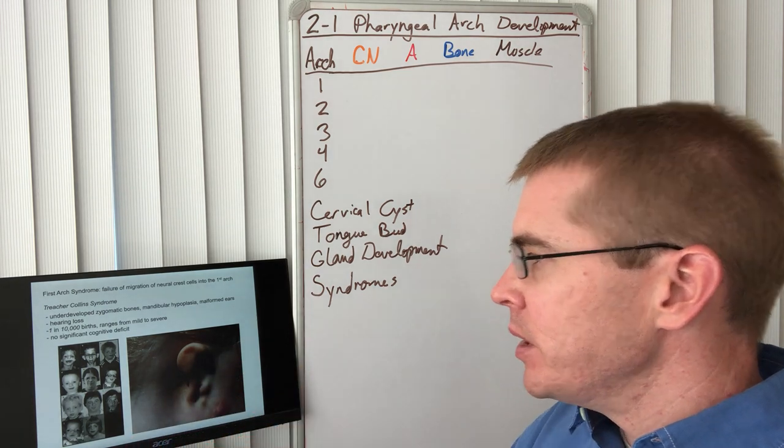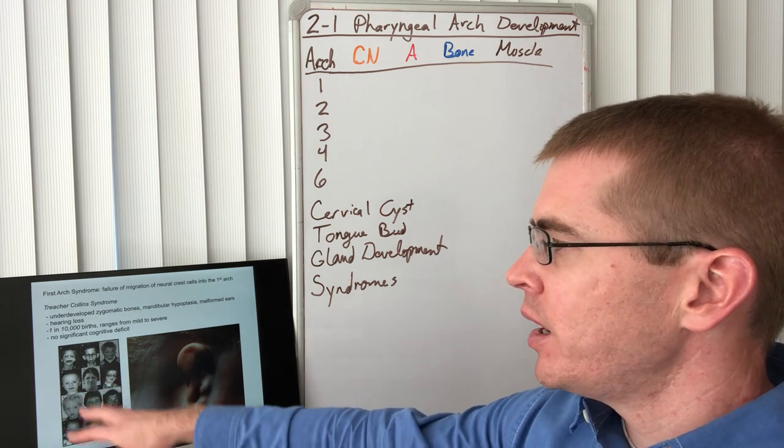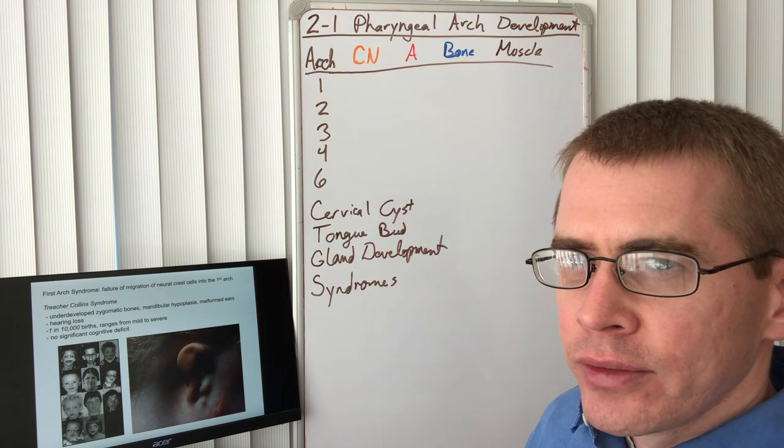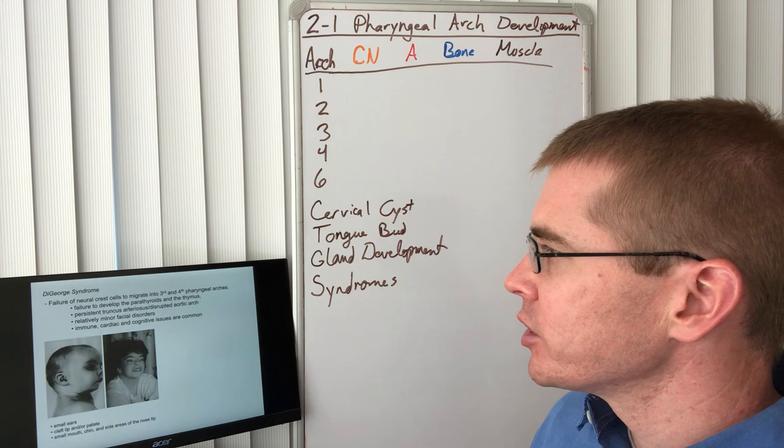About one in 10,000 births have this condition, and they can be mild to severe, as you see here. So mild to however many degrees of severity of hypoplasia and malformation.